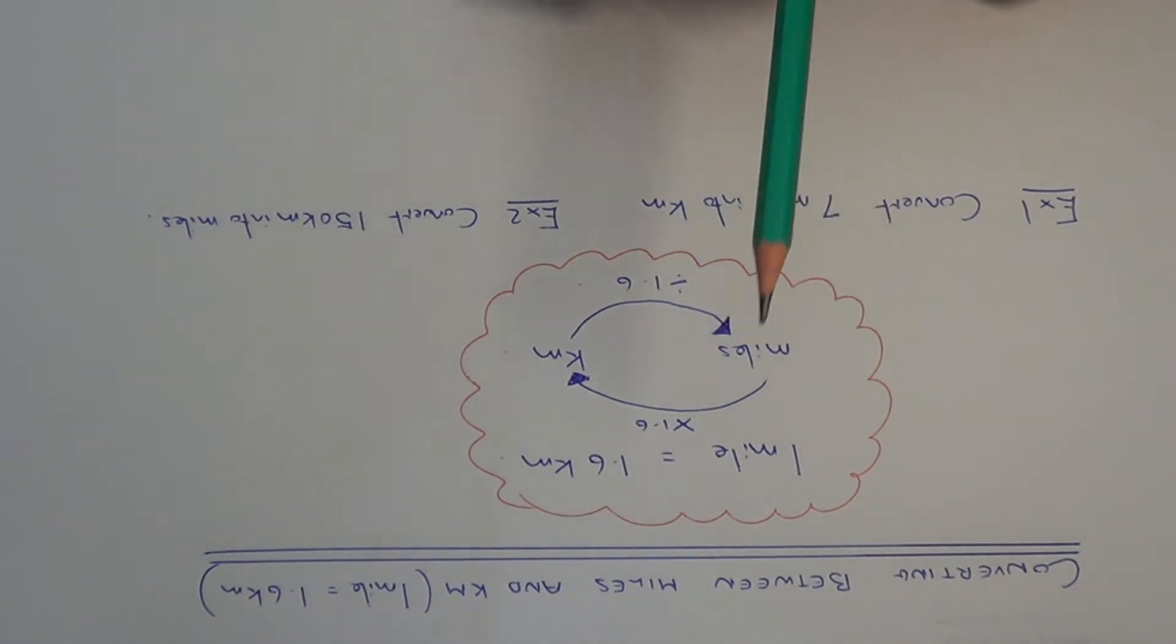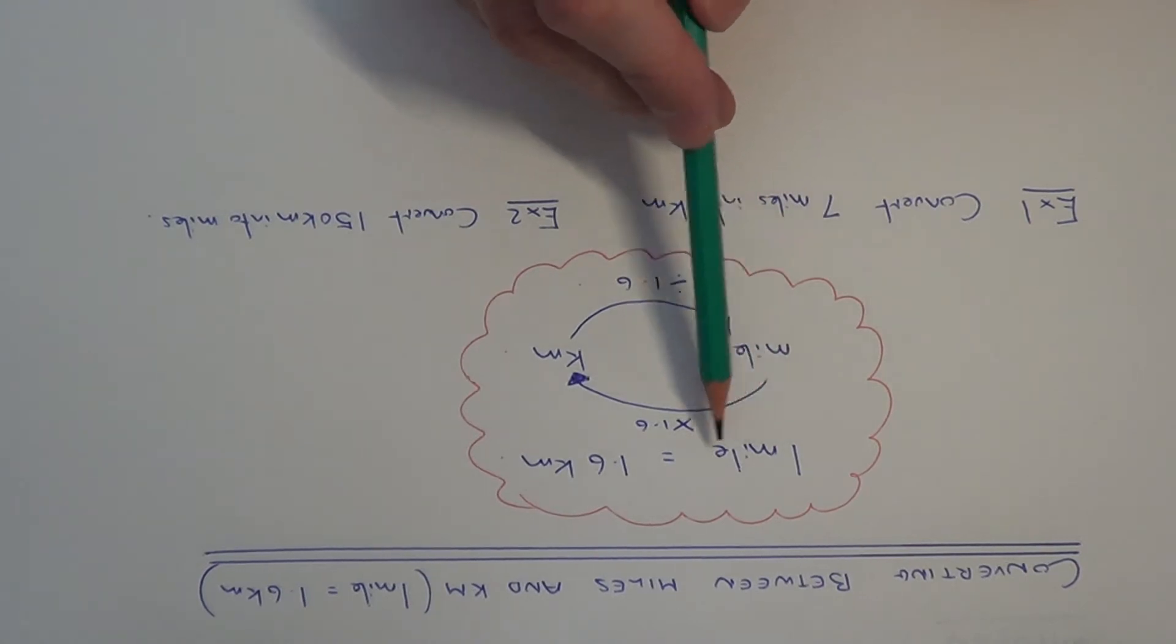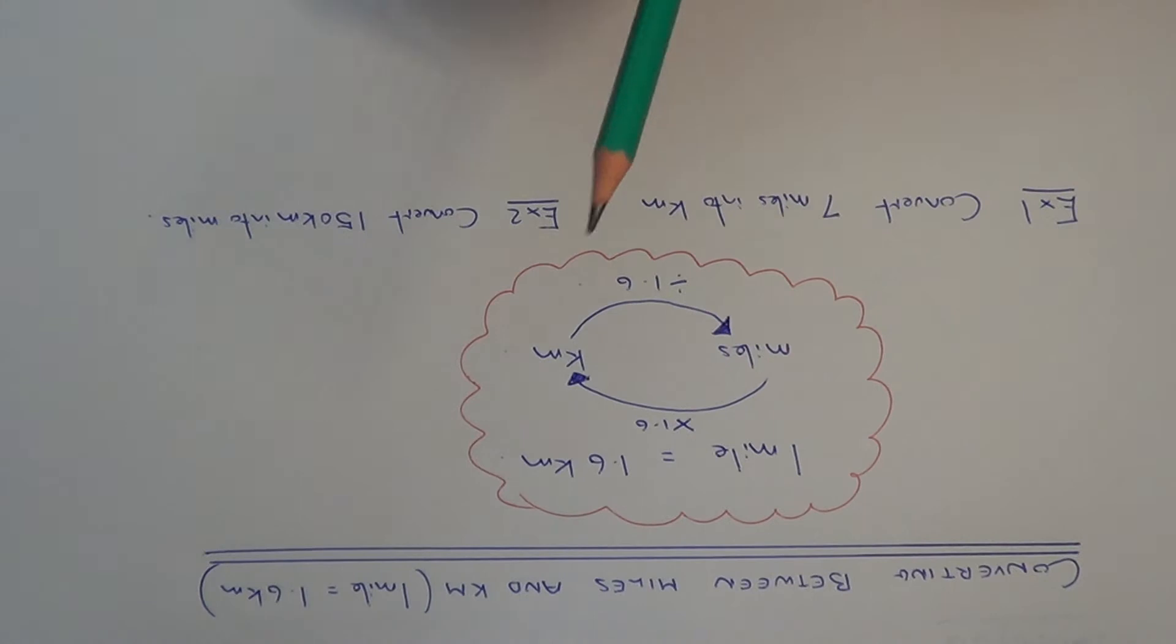So you need to remember then that there is 1.6 kilometres in a mile. So if you need to convert miles into kilometres you multiply the number by 1.6, and if you convert the number back from kilometres into miles you divide by 1.6.